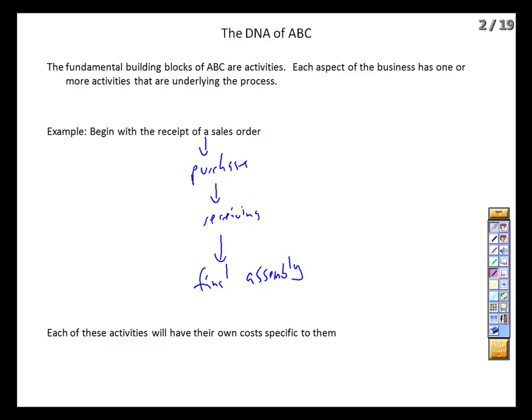At each step along the way, we are generating costs. Costs are generated here because we have employees taking orders, and we have telecommunications infrastructure and the like. They're generated here because we've got a purchasing person, and we've got warehousing staff. All of that happens before our workers insert tab A into flap B.